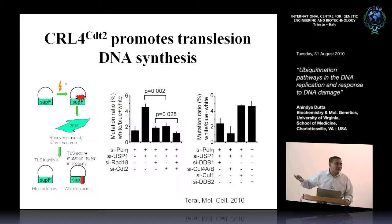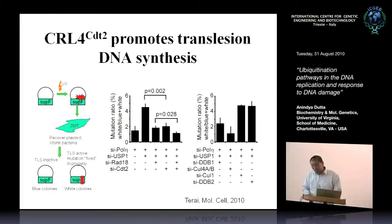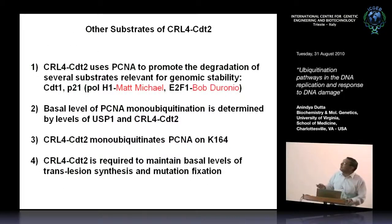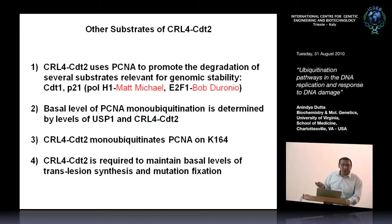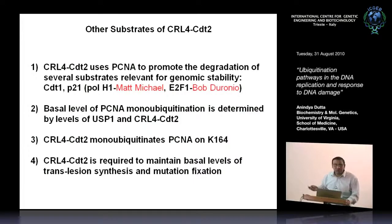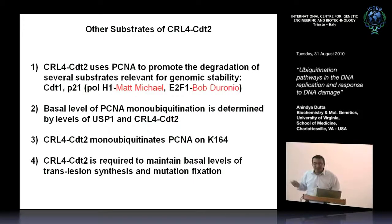To summarize: CRL4-CDT2 uses PCNA to promote the degradation of many substrates relevant to genomic instability — CDT1, P21. Matt Michael in C. elegans has shown that Pol eta itself is polyubiquitinated; Bob Duronio in flies has shown E2F1 is getting polyubiquitinated. I think this list will keep on growing. Amazingly, there's also a basal level of PCNA monoubiquitination not dependent on exogenous DNA damage, and that seems to be significantly affected by CRL4-CDT2. PCNA has to retain its lysine 164 to get this monoubiquitination.